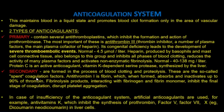The anticoagulation system maintains blood in a liquid state and promotes blood clot formation only in the area of vascular damage. There are two types of anticoagulants. In cases of insufficiency of the anticoagulant system, artificial anticoagulants are used, for example, anti-vitamin K agents, which inhibit the synthesis of prothrombin, factor 5, and factor 7.